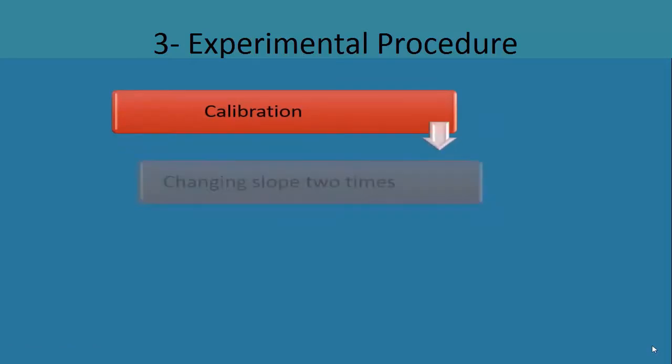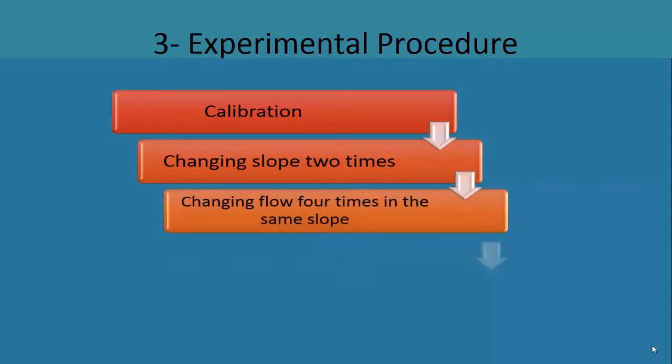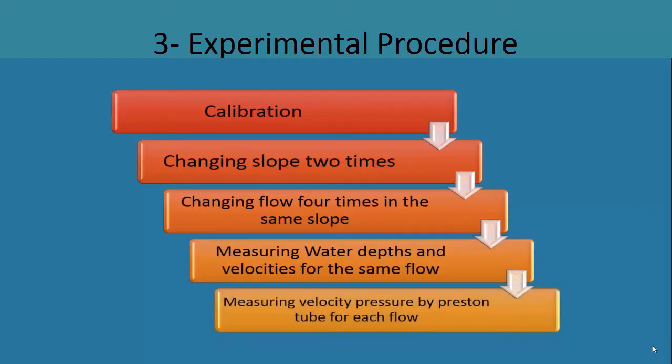Our work procedure was as follows. First, we make a calibration of the flume to get Manning coefficient. Second, we decided to change slope two times. For each slope, we change flow four times. For each flow, we measured water depths and velocities at upstream and downstream of the studied reach. Also for each flow, we measured velocity pressure in the middle of the studied reach by Preston tube.